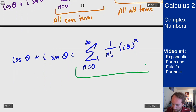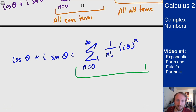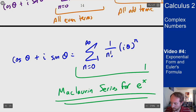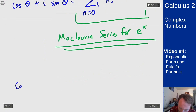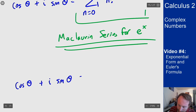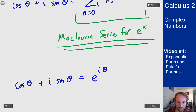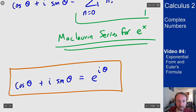That sum from 0 to infinity of 1/n! times something to the n is exactly the Maclaurin series for e^x. With argument iθ, this tells me that cosine theta plus i sine theta equals e^(iθ). This is Euler's formula, and it gives us a much nicer way of looking at complex numbers that will be really helpful going forward.